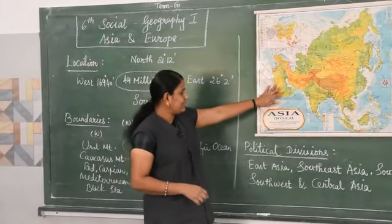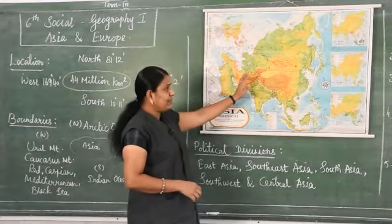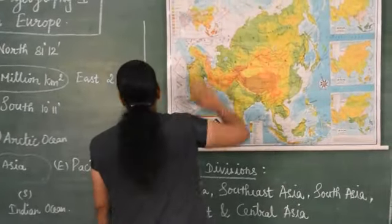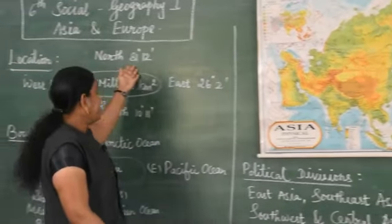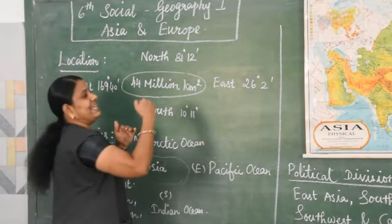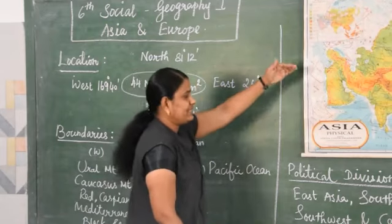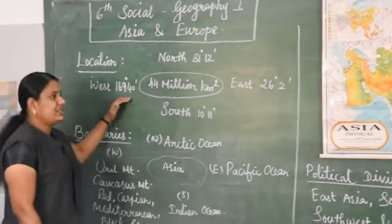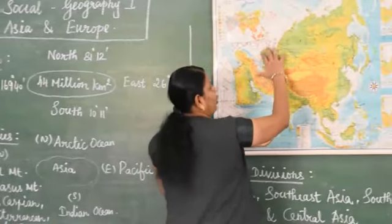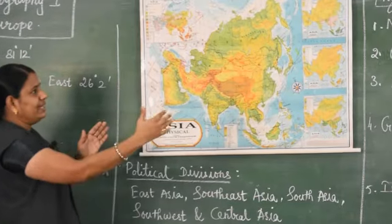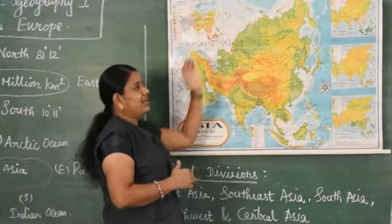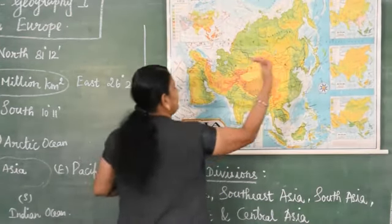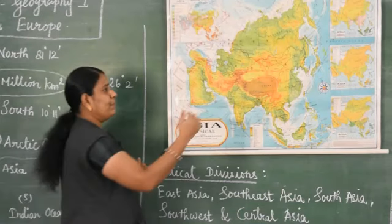Here I have used the Asia physical map. When we see the Asia map, we can immediately guess its location - where it is located. It is located in the north side at Arctic Ocean, 81 degrees 12. If we see the east side, 26 degrees and 2. If we see the south side, 10 degrees and 11. In the west side, 169 degrees and 40. In our north side we can see the Arctic Ocean, south side Indian Ocean, east side Pacific Ocean.